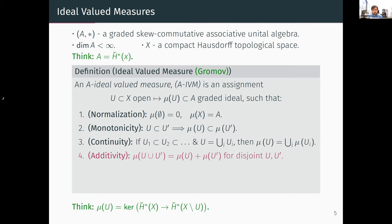The continuity axiom states that if U is an ascending union of open sets then its measure is the union of measures. This is the reason we work with Čech cohomology — Čech is continuous with respect to limits. The additivity axiom states that for disjoint sets the measure of their union is the sum (as ideals) of the corresponding measures, which is a manifestation of the Mayer-Vietoris property for disjoint sets.